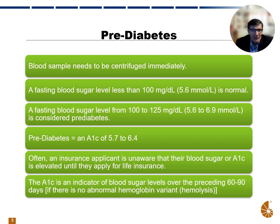A fasting blood sugar level less than 100 milligrams per deciliter is normal. A fasting blood sugar from 100 to 125 is considered pre-diabetes, and that would equate to an A1c of somewhere in the 5.7 to 6.4 range. There are a lot of people who are normal that have a 5.7 or 5.8, but this is what is classically defined as pre-diabetes.